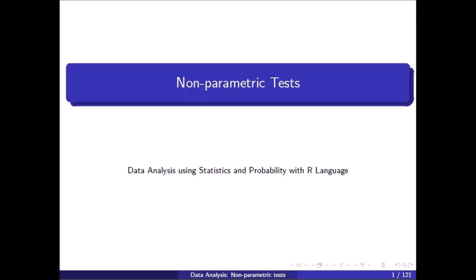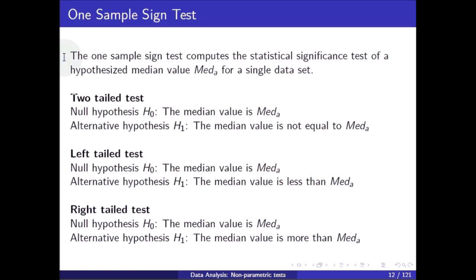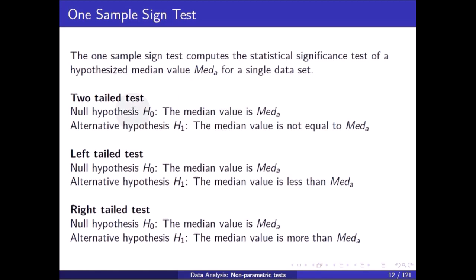Hello friends, in this video we will talk about the one sample sign test. The one sample sign test computes the statistical significance test of a hypothesized median value — median A — for a single dataset. For a two-tail test, the null hypothesis is that the median value equals median A, and the alternative hypothesis is that the median value is not equal to median A.